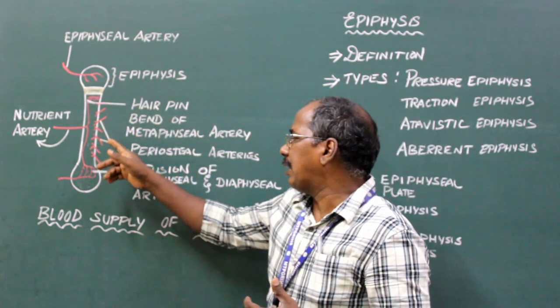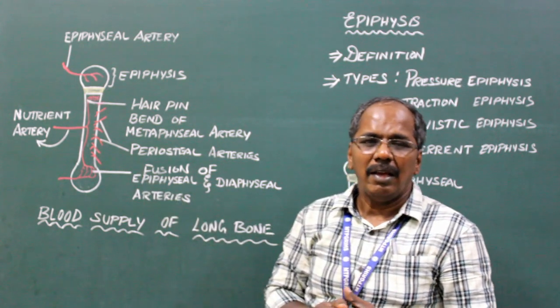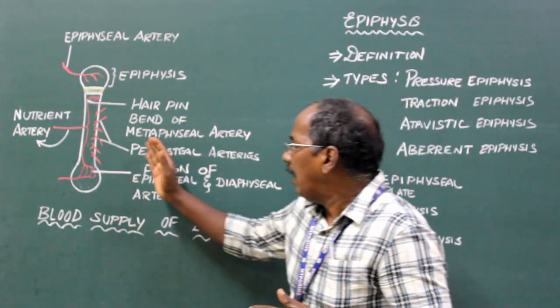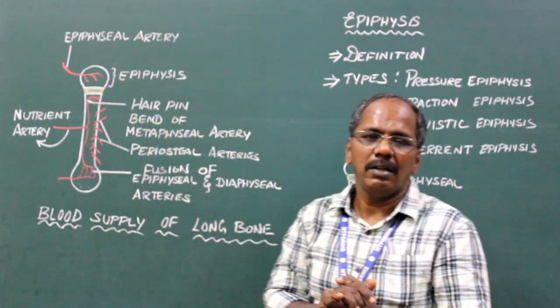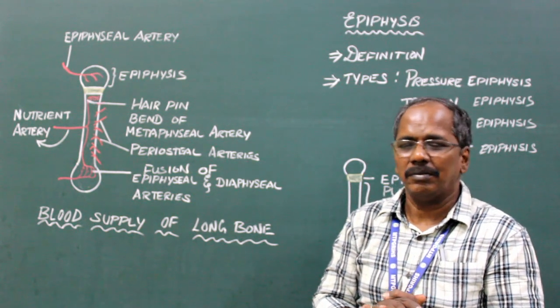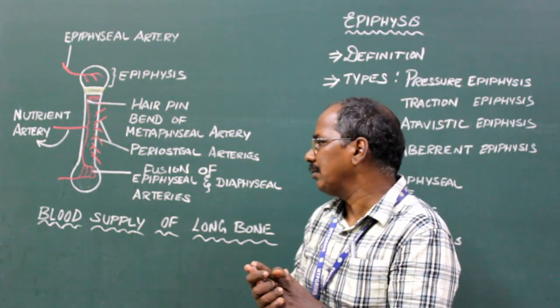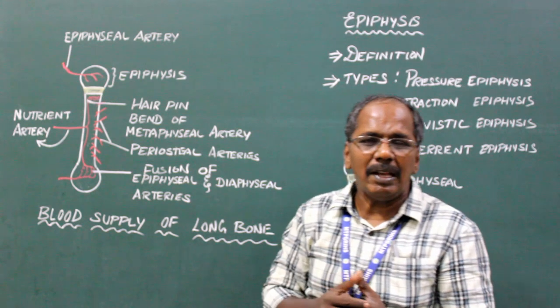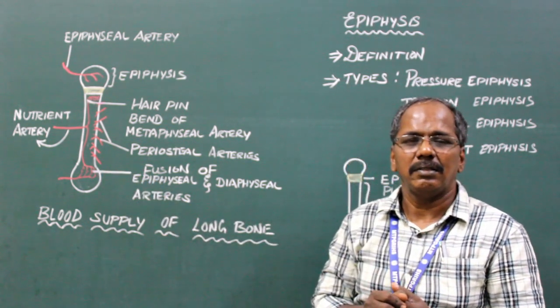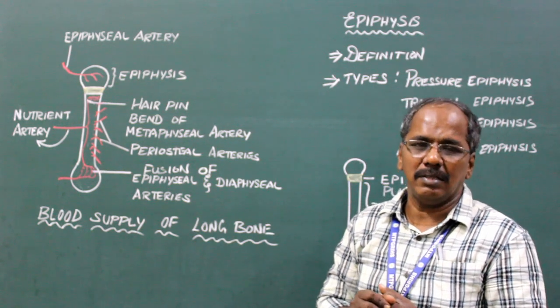Periosteal arteries are present in the periosteum, the outer covering of the bone, and supply the outer third of the cortex. Metaphysial arteries are derived from neighboring vessels and supply the metaphysis.